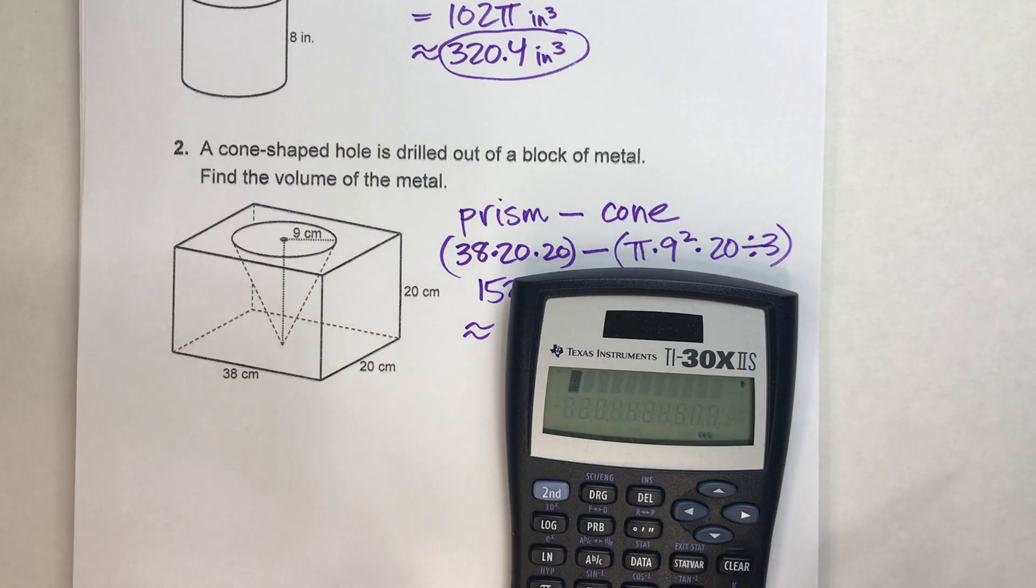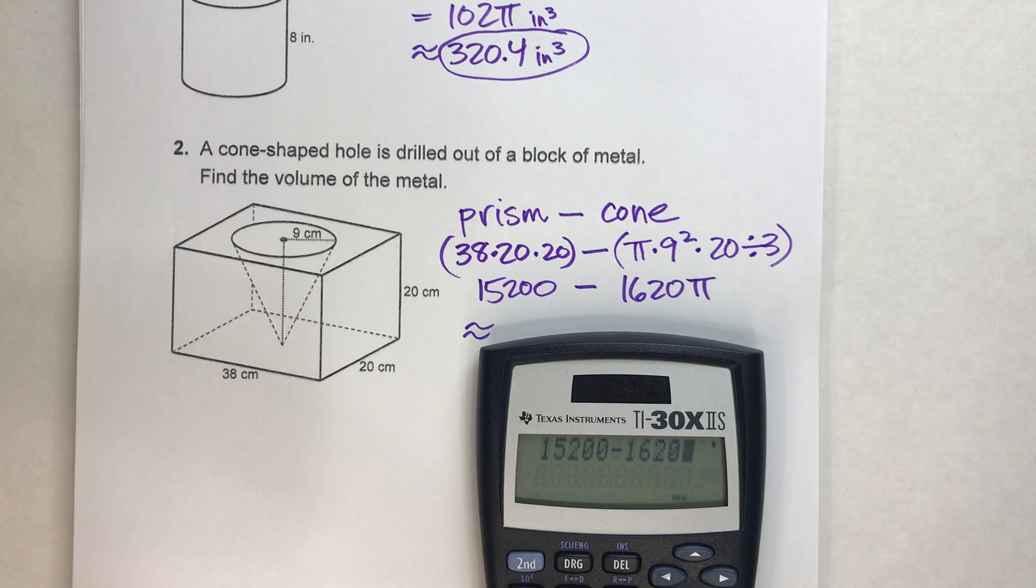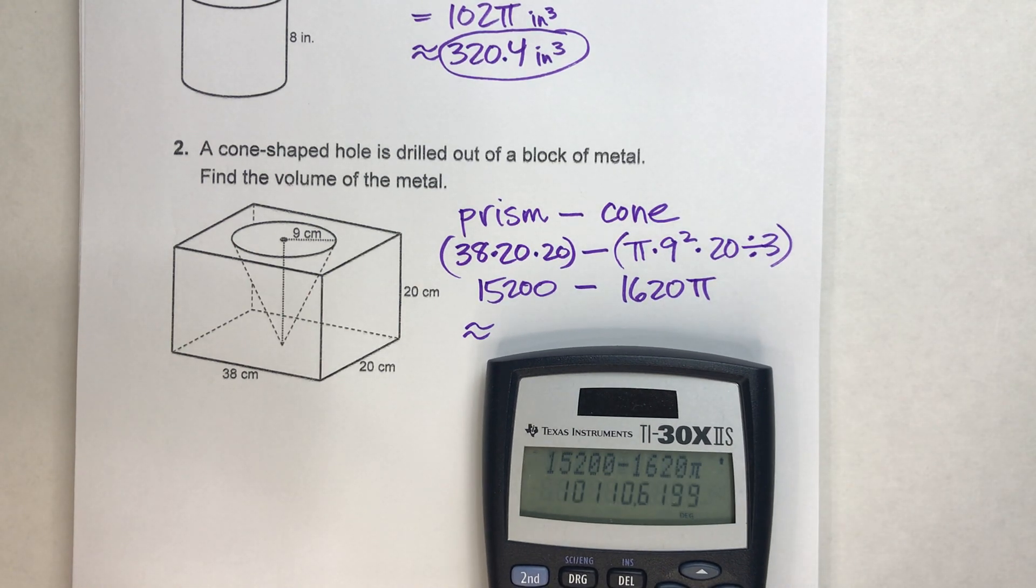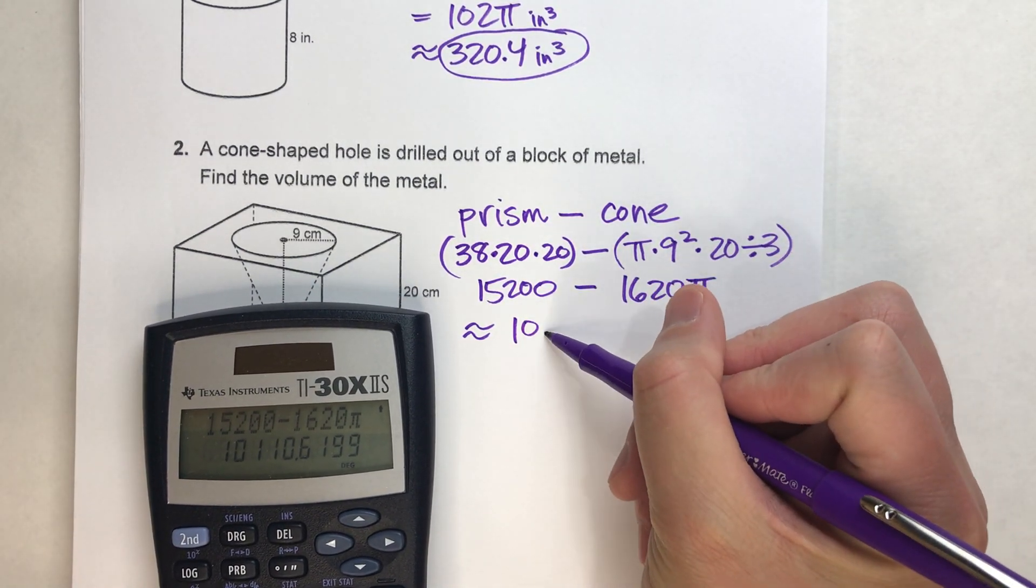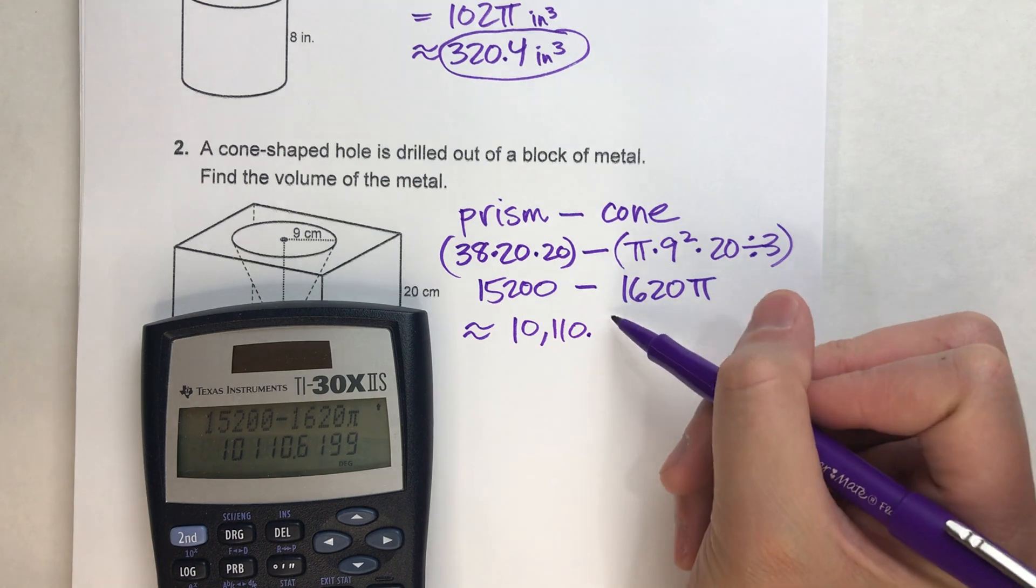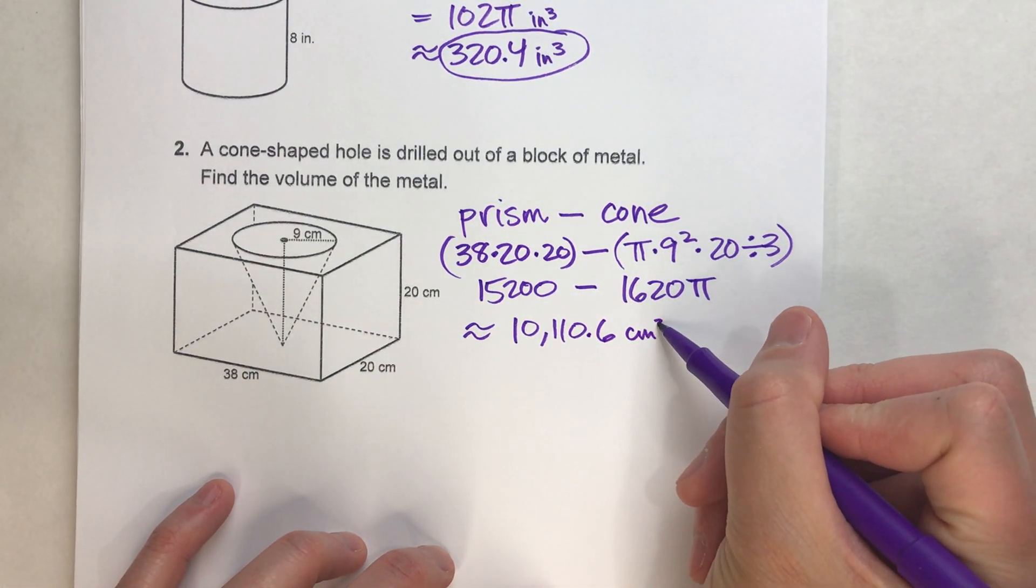So let's do that. 15,200 minus 1620 pi gets me about, it's pretty big, 10,110.6, and that'll be centimeters cubed.